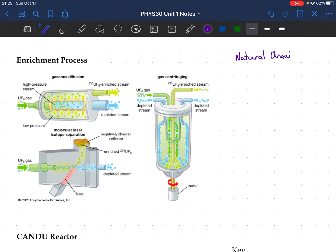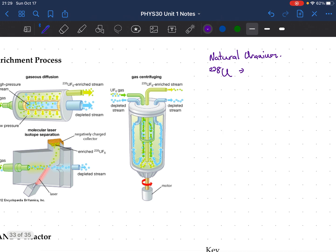Natural uranium. Natural uranium has three isotopes. It has uranium-238. And this is most of it. Uranium-238 is 99.274%.